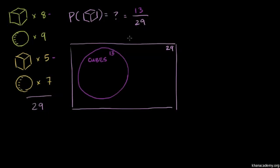The probability of getting a cube is the number of events which meet our criteria divided by the total number of possibilities, which is 29.